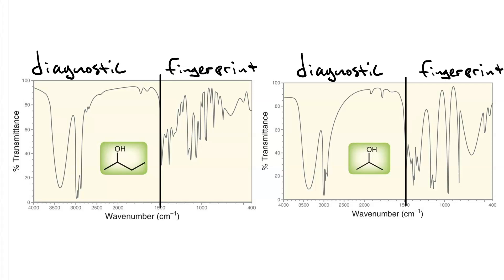So if we look in the diagnostic region for each spectrum, we see two big peaks. This broad, intense peak, centered at about 3400, is characteristic of an alcohol. And we see that in both.